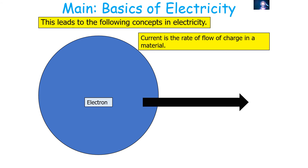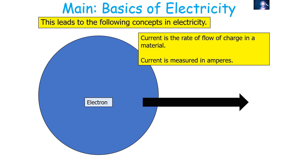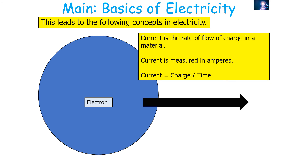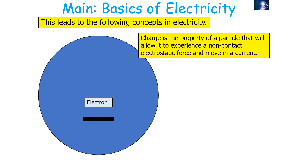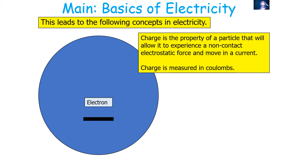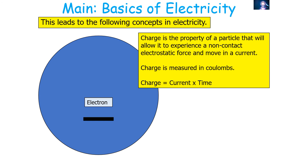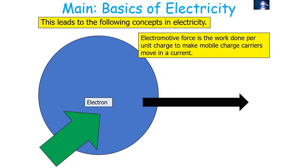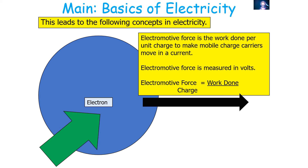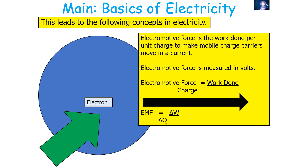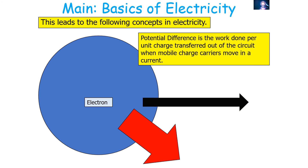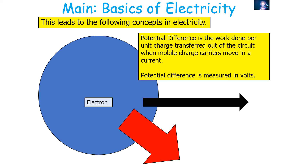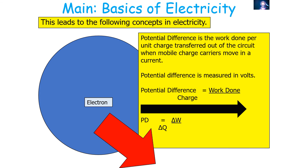Current is the rate of flow of charge in the material, measured in amps, given by the equation I equals delta Q over delta T. Charge is the property of a particle that allows it to experience a non-contact electrostatic force and move in a current, measured in coulombs, where delta Q equals I times delta T. The electromotive force is the work done per unit charge to make mobile charge carriers move in a current, measured in volts: EMF equals delta W over delta Q. Potential difference is the work done per unit charge transferred out of the circuit, also measured in volts: PD equals delta W over delta Q.